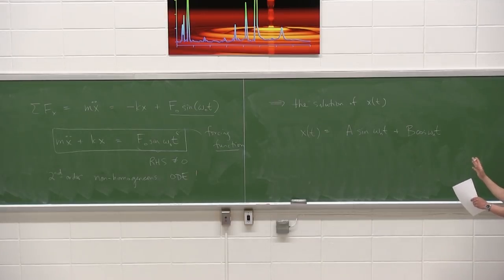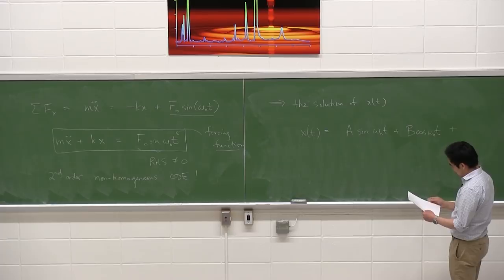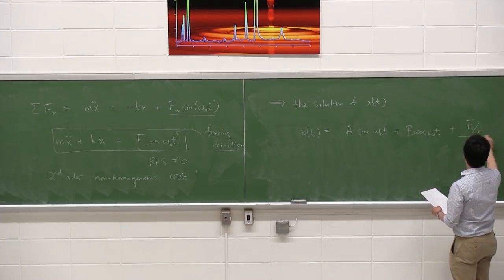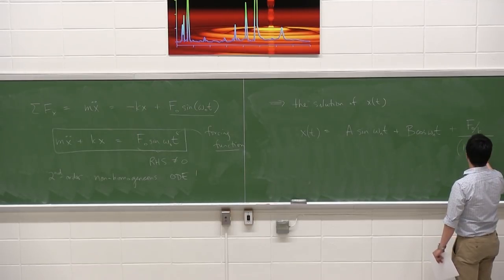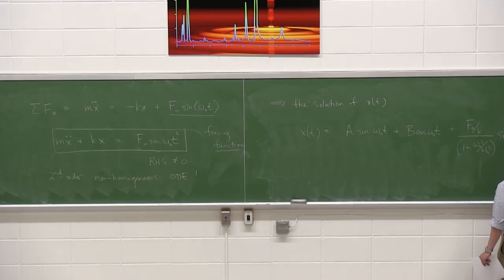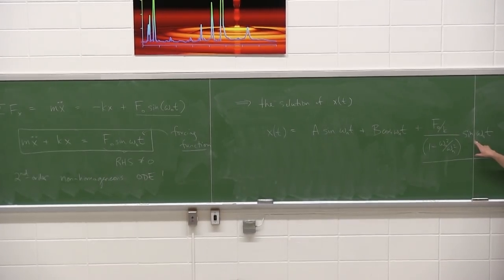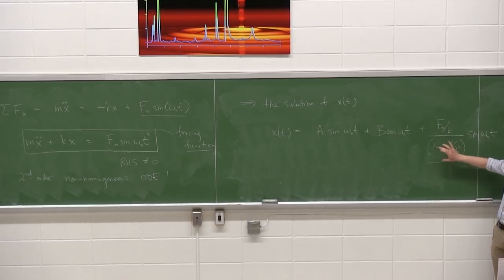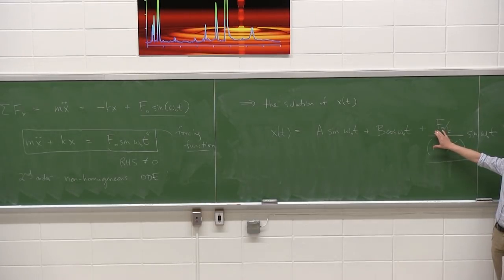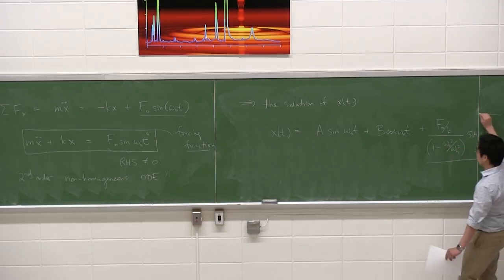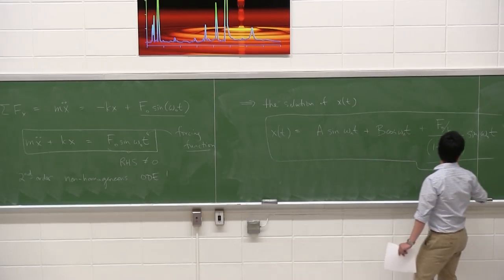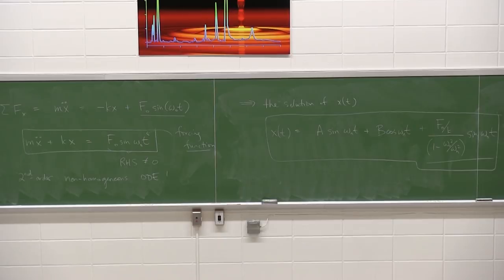The solution is the same as for free vibrations with a new twist. There's one extra term — a third term in the complete solution for x(t) — which is a sinusoid with frequency omega_0. Its amplitude is a fraction involving F_0, the spring constant, and the natural frequency. This is your final solution.